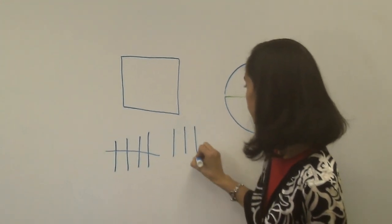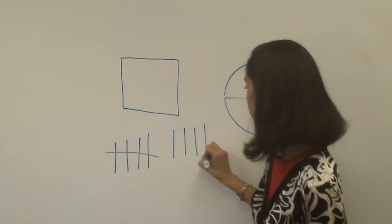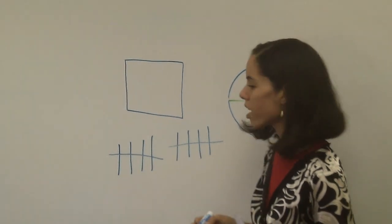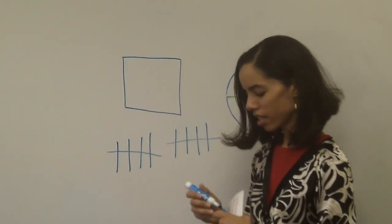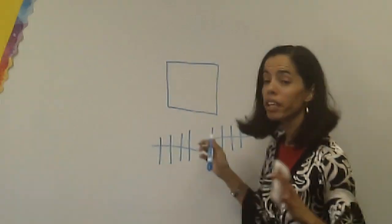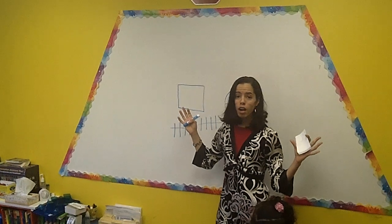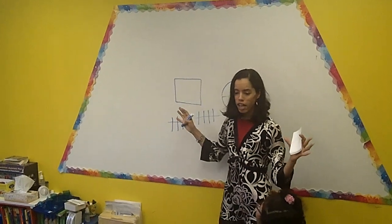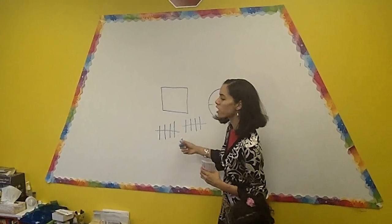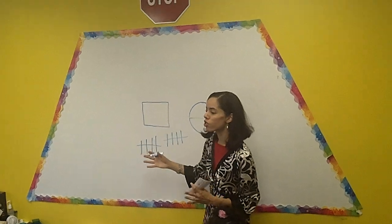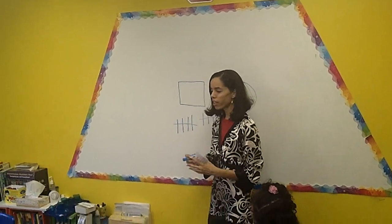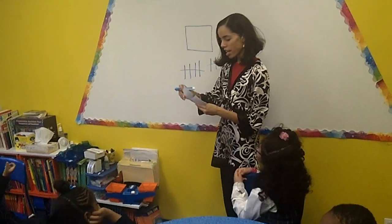Six, seven, eight, nine, ten. Very good. So I just made the number ten on my tally. And my leaders are so smart — they know how to make a tally and take these numbers and turn it into a bar graph. Very, very good, leaders.